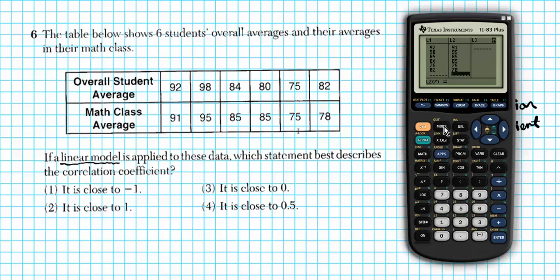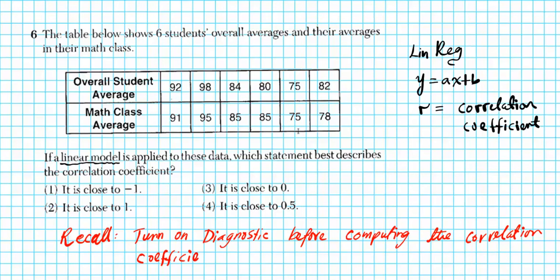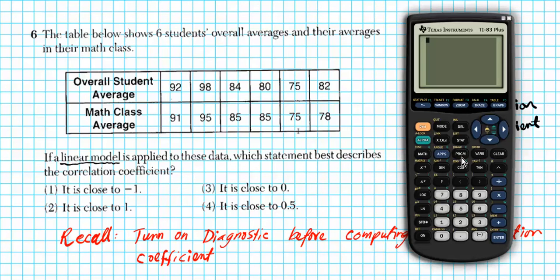Now let's quit. Before you calculate your correlation coefficient, one thing you want to do is you want to turn on your diagnostic. So let's put the side note here. You want to recall, turn on diagnostic before computing the correlation coefficient. Because if you do not turn on diagnostic, guess what? It's only going to show you the linear model, the linear regression equation. That's all it's going to show you. It's not going to show you the R value.